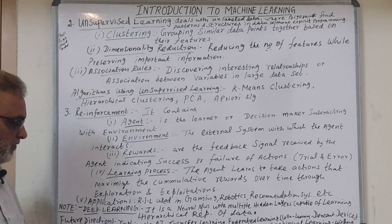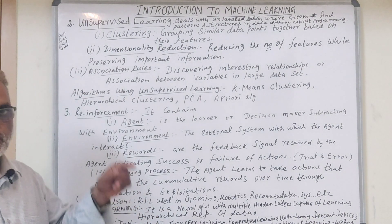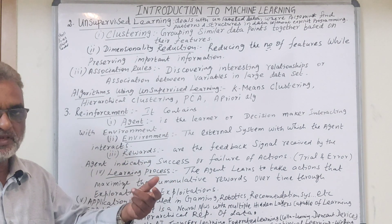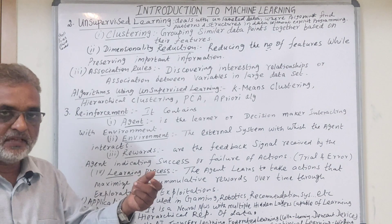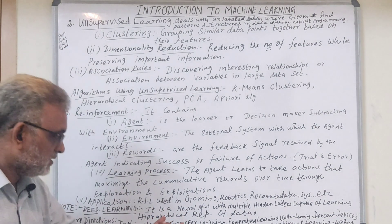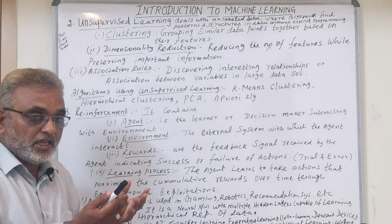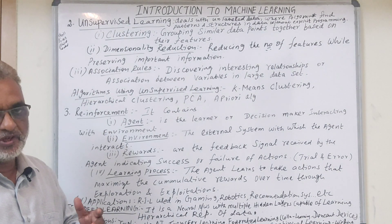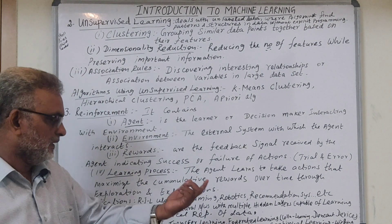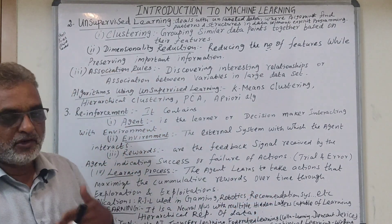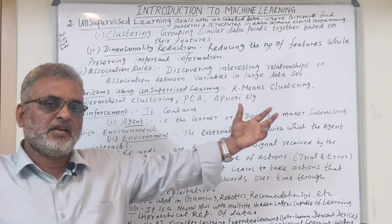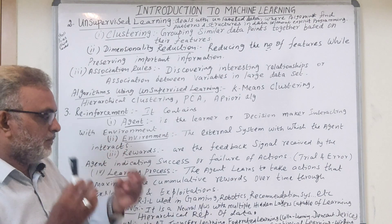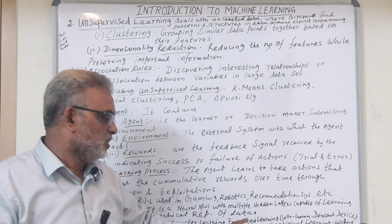Future directions: we have explainable AI — the system must be able to explain the reasoning behind a particular solution. Then transfer learning: the concept of knowledge used in solving one problem can be applied to some other problem. Then federated learning: collaborative learning on decentralized devices located at different positions, collecting information from them to learn.